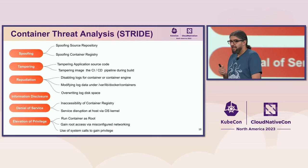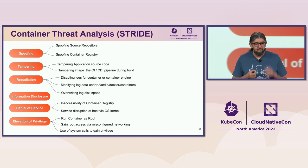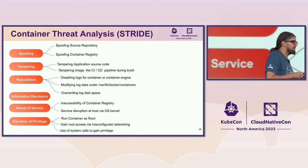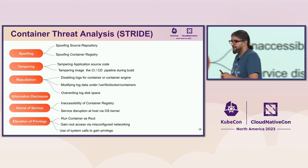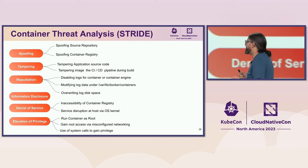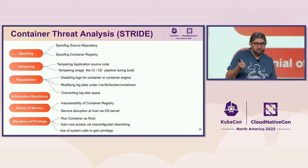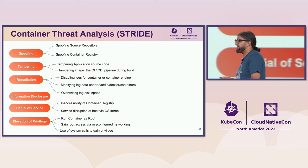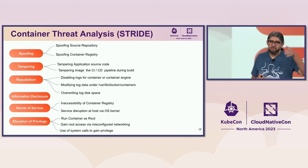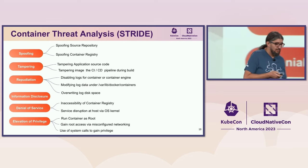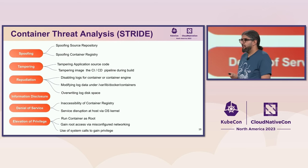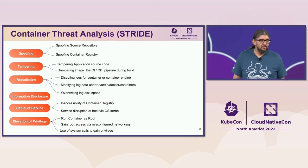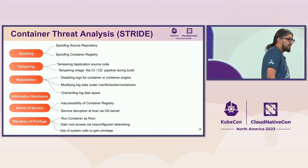The next step is to categorize container threats using STRIDE. For example, for spoofing — someone accessing the source repository or tampering with a container image in the registry. For repudiation — someone disabling or modifying log data at the network or storage layer. The idea is to start categorizing threats in your context, and the next step will be assessment and mitigation for those threats, which we'll discuss later in the adversary emulation section.